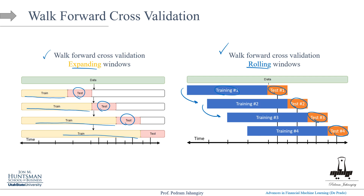In expanding window walk-forward cross-validation, the training set expands with each iteration while the test set size remains fixed. This is used when limited time series data is available and there is no structural change. A key advantage is the clear historical interpretation: it is consistent with historical backtesting, where you observe one full path of data from day one to day t. The test set is completely out of sample, and since it always comes after the train set, embargoing is not needed — though purging is still required.